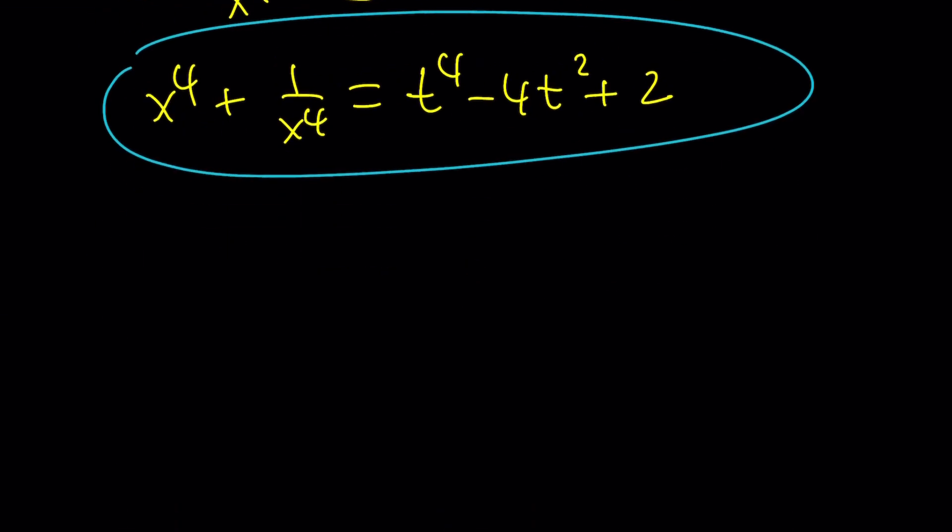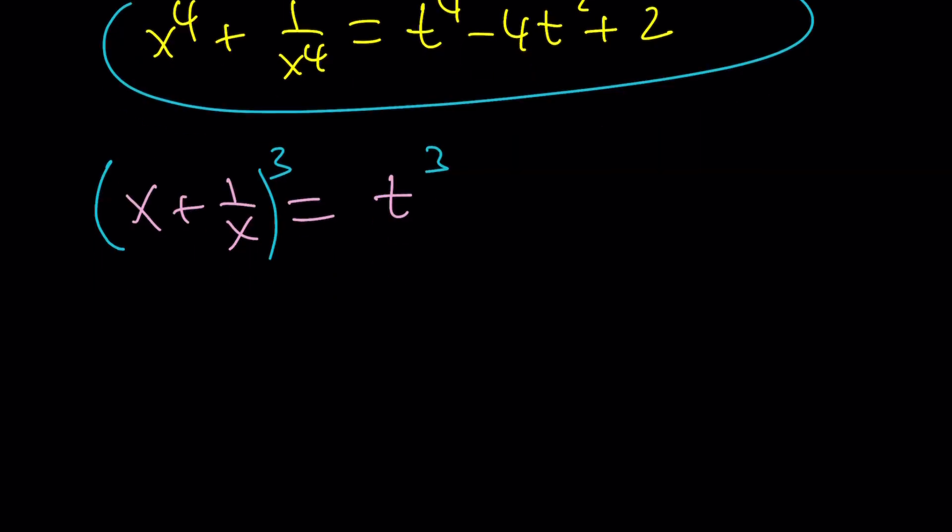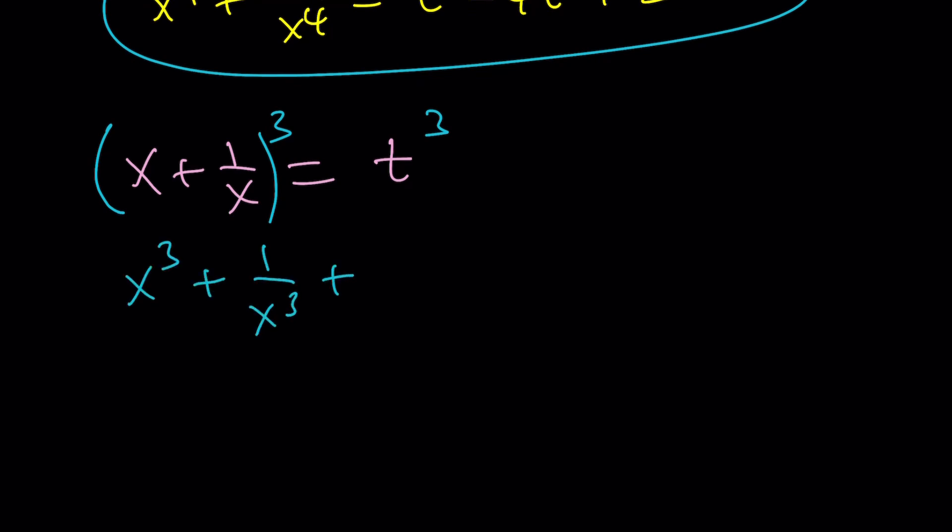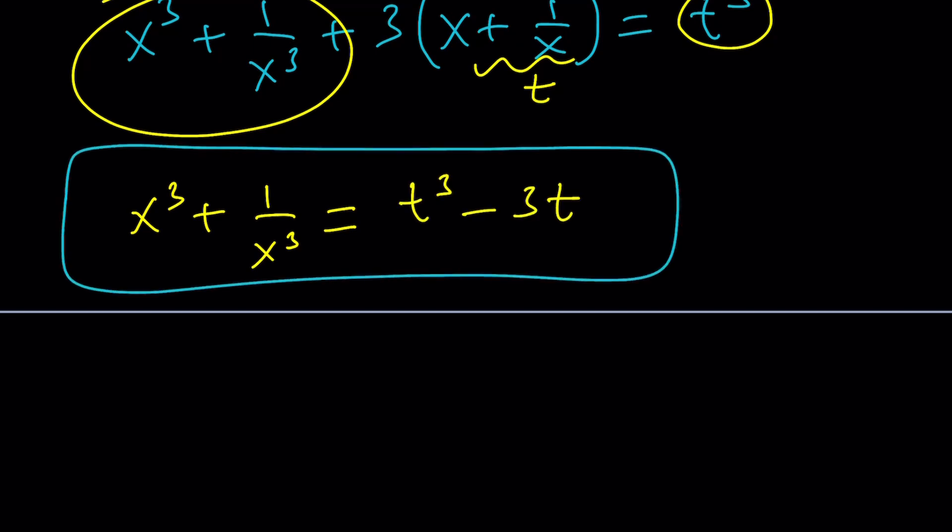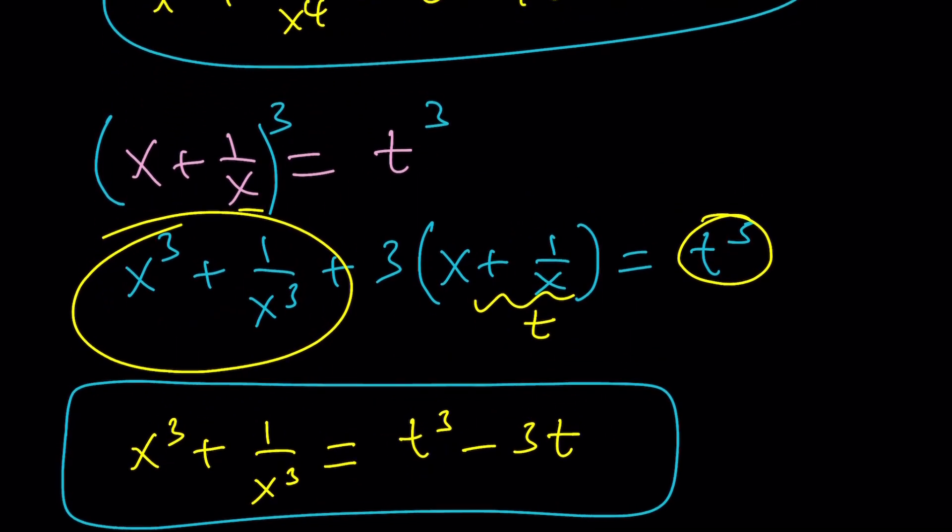If you subtract 2 from both sides, that'll give you x to the fourth plus 1 over x to the fourth as t to the fourth minus 4t squared plus 2. That's our sum of fourth powers. We needed the second powers for the fourth. Now we're going to start with the basics again. I'm going to use x plus 1 over x equals t. This time, instead of squaring our fourth powers, I'm going to cube both sides. You see what I'm getting at?